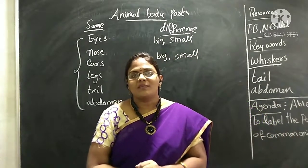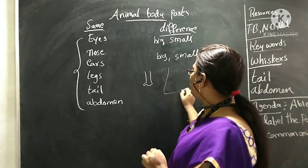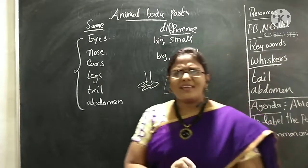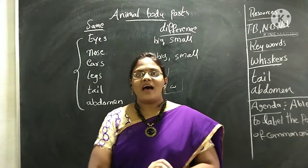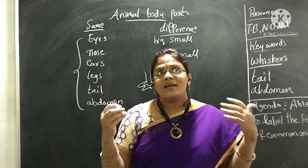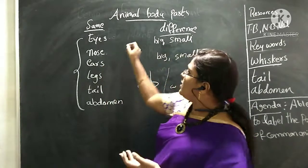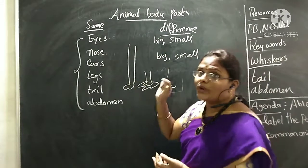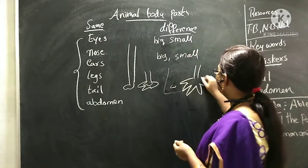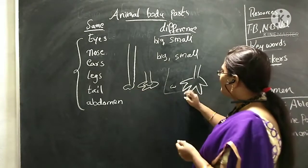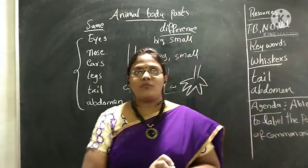Why do legs look different in all the animals? Why are their legs different — some small, some big — and their feet are also different. All the animals' legs are different from each other because they live in different places. Depending upon the place they live — for example, the horse has very big legs which help it to run fast. But comparing to the duck, the duck's legs help it to swim in the water. That is why different types of animals have different types of legs.